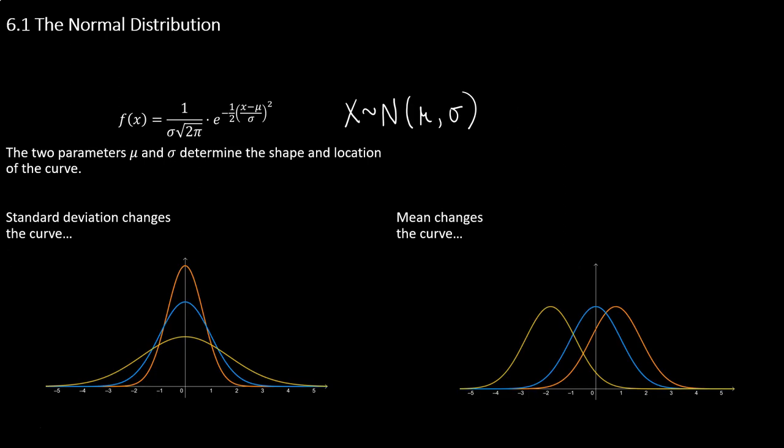Let's talk more about how mu and sigma determine the shape and location of the curve. The blue curve is the standard normal — it has a mu of zero and a standard deviation of one. If I were to increase the standard deviation to something larger than one, my curve would become shorter and wider, because the area under the curve has to total one. I can't add or subtract area, so we're reshaping it. With a larger standard deviation, the curve becomes short and wide.